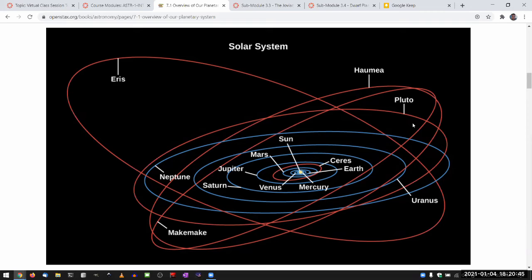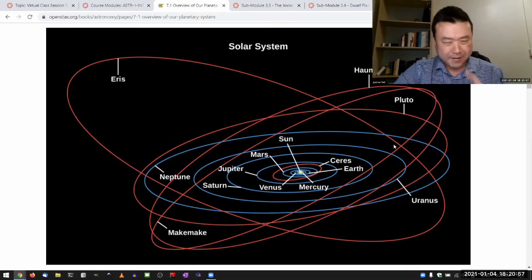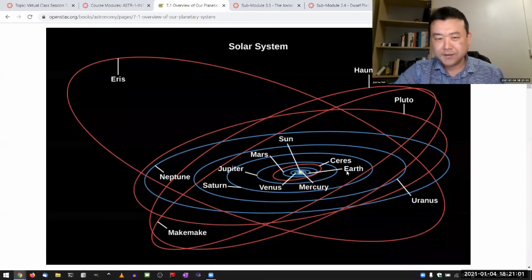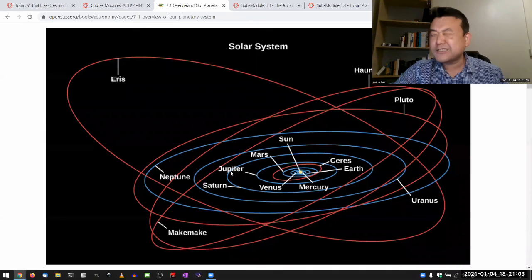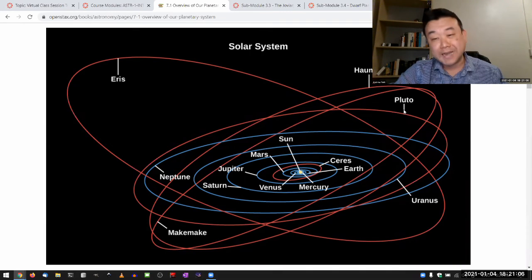So it was ninth planet for a while, and there was a mnemonic that people, you might have learned this mnemonic as a way to memorize the planets in the solar system. The one I learned was, my very excellent mother just served us nine pizzas.